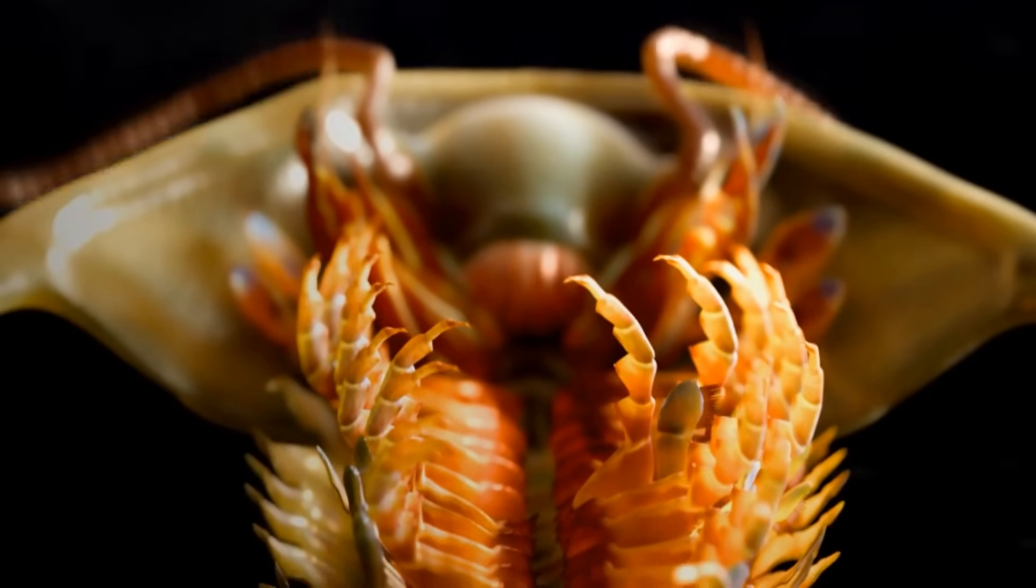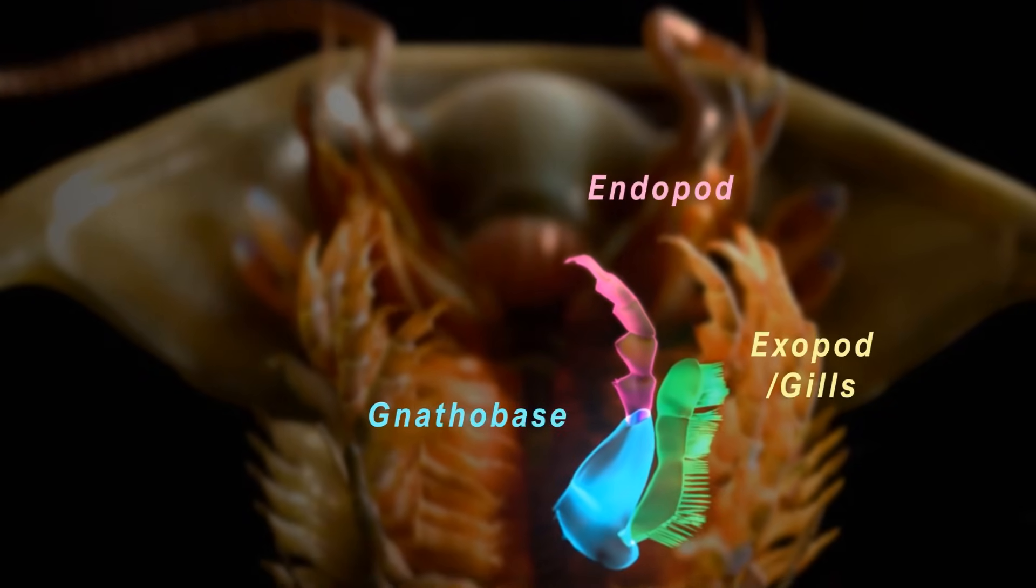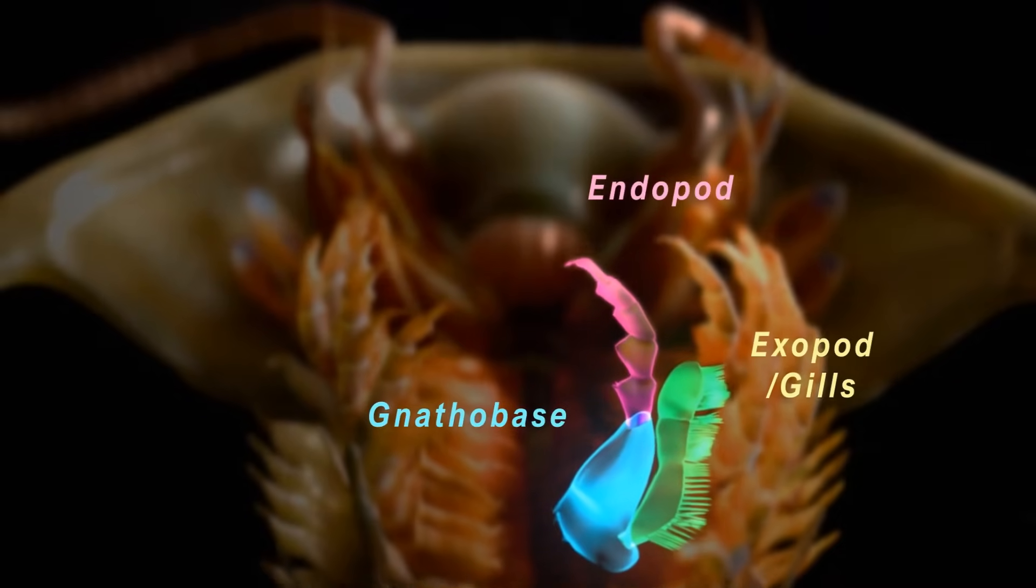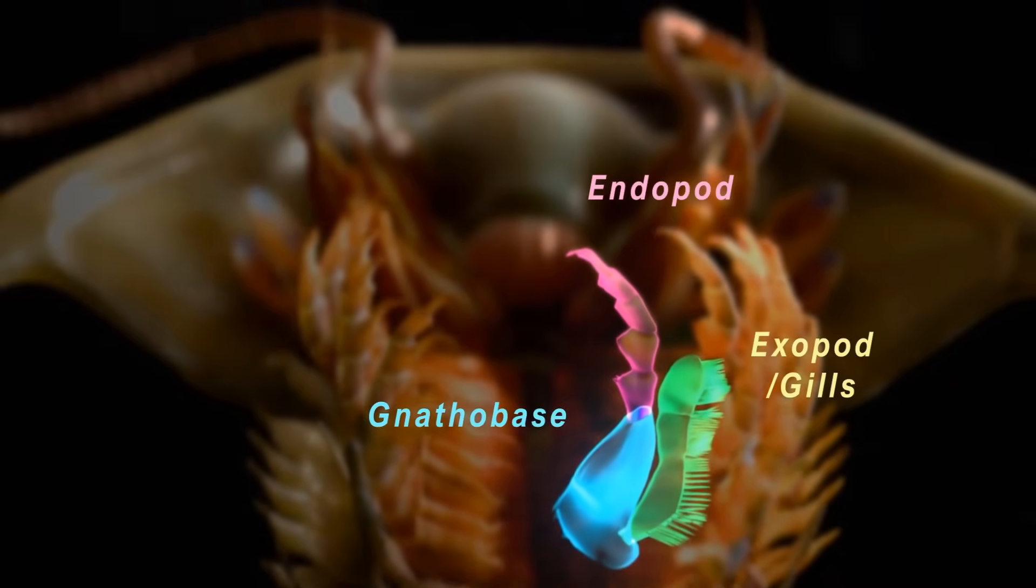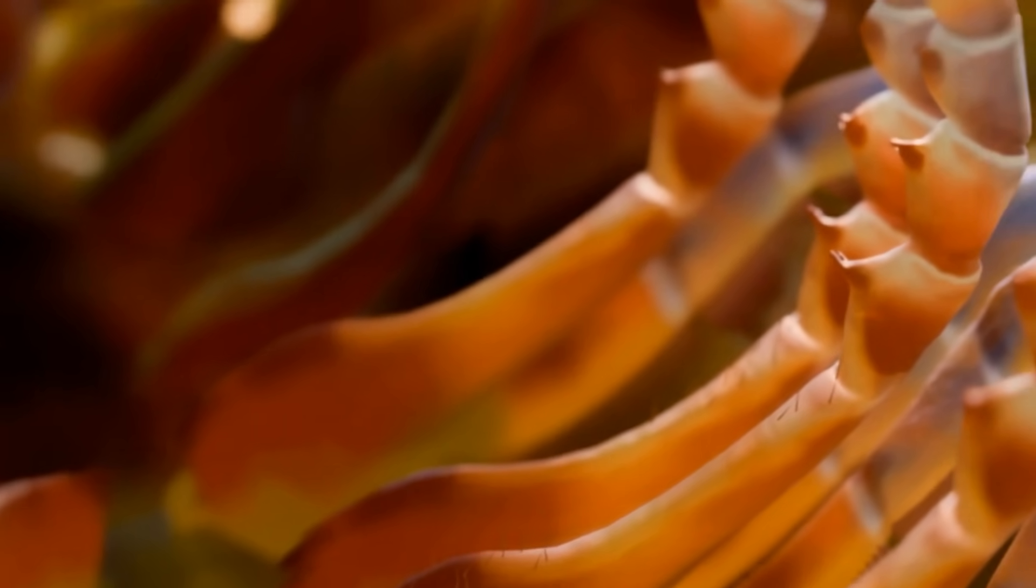Soft parts that we've already known, like their branching legs, which consist of the gnathobase, the walking endopod, and the gill exopod, are preserved here in detail, down to the spines and setae from every segment.